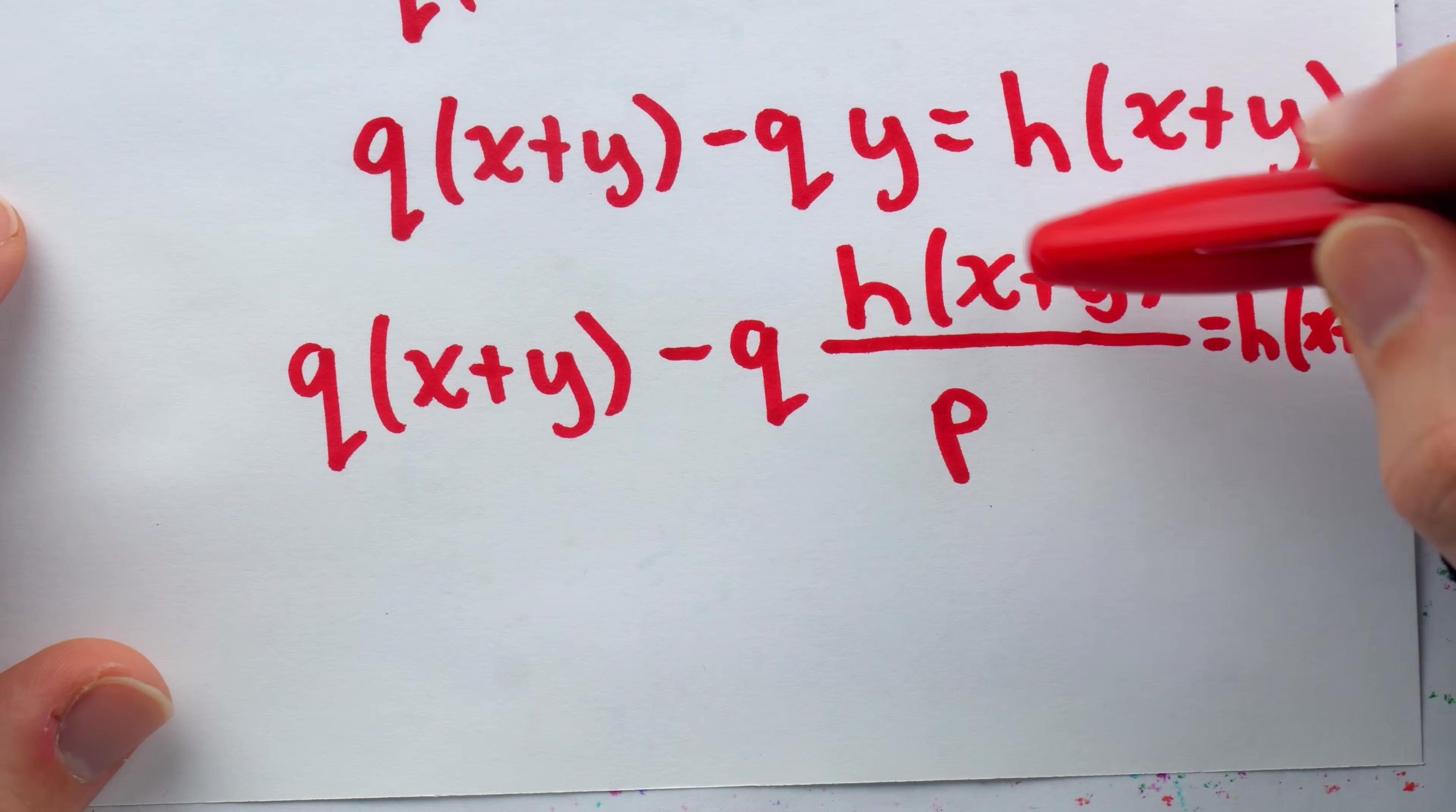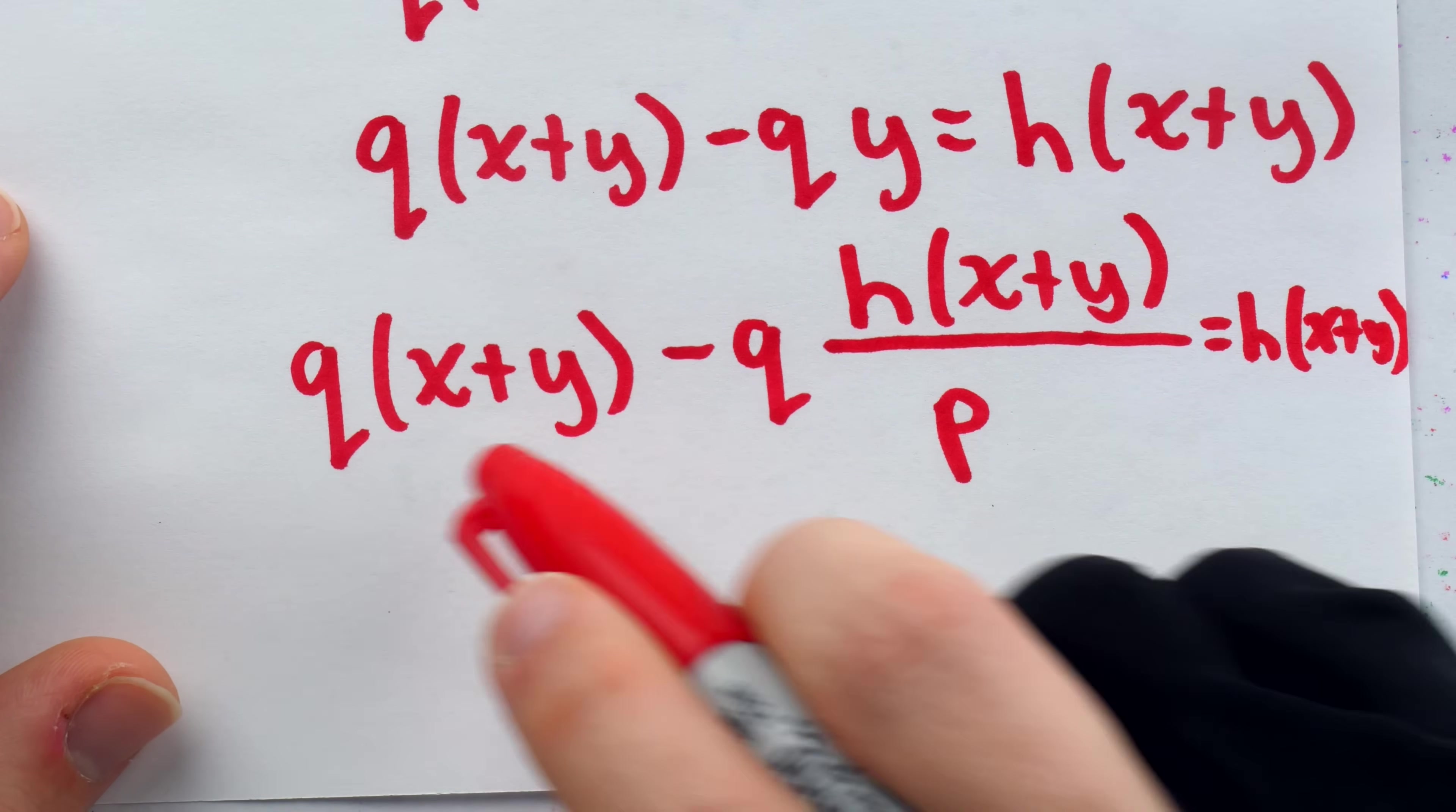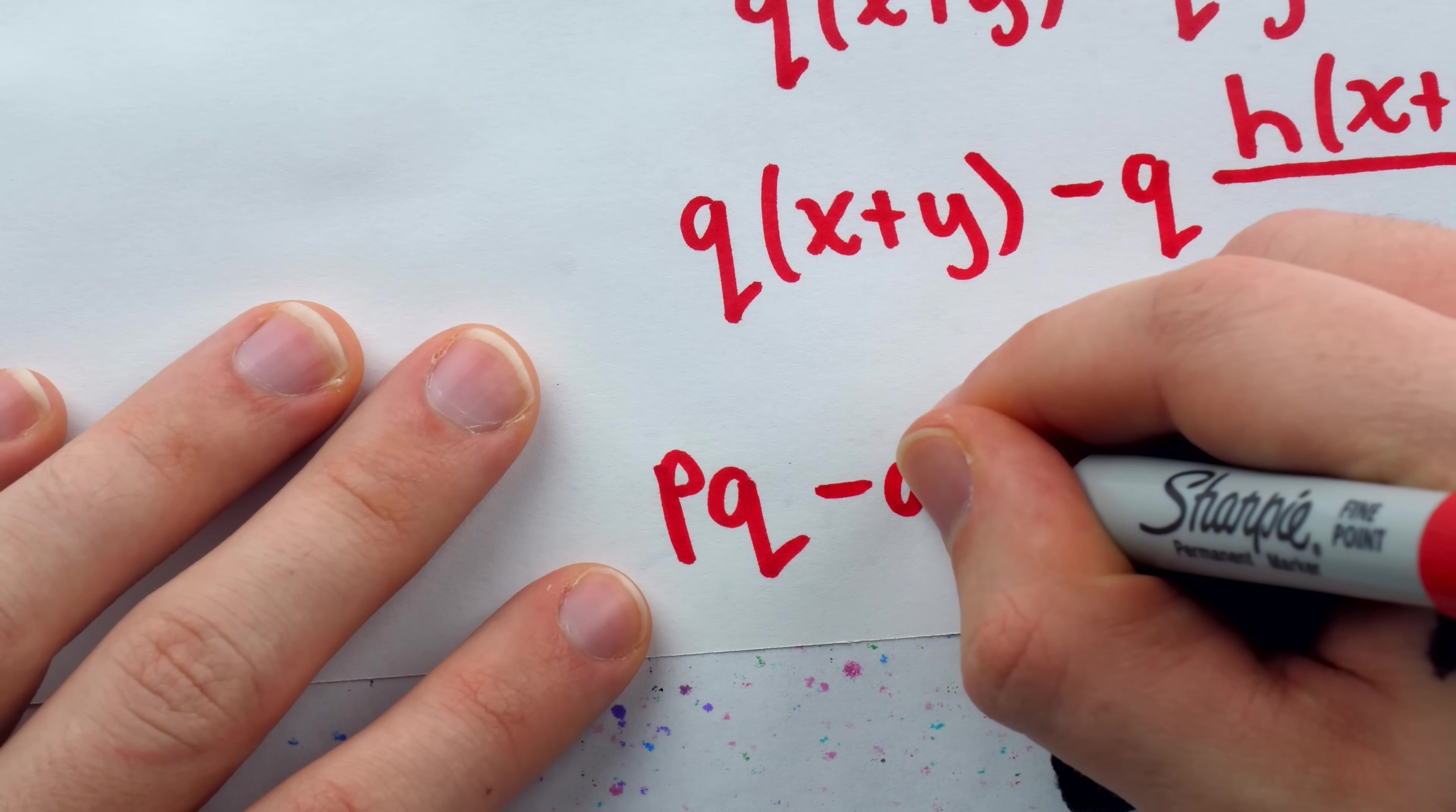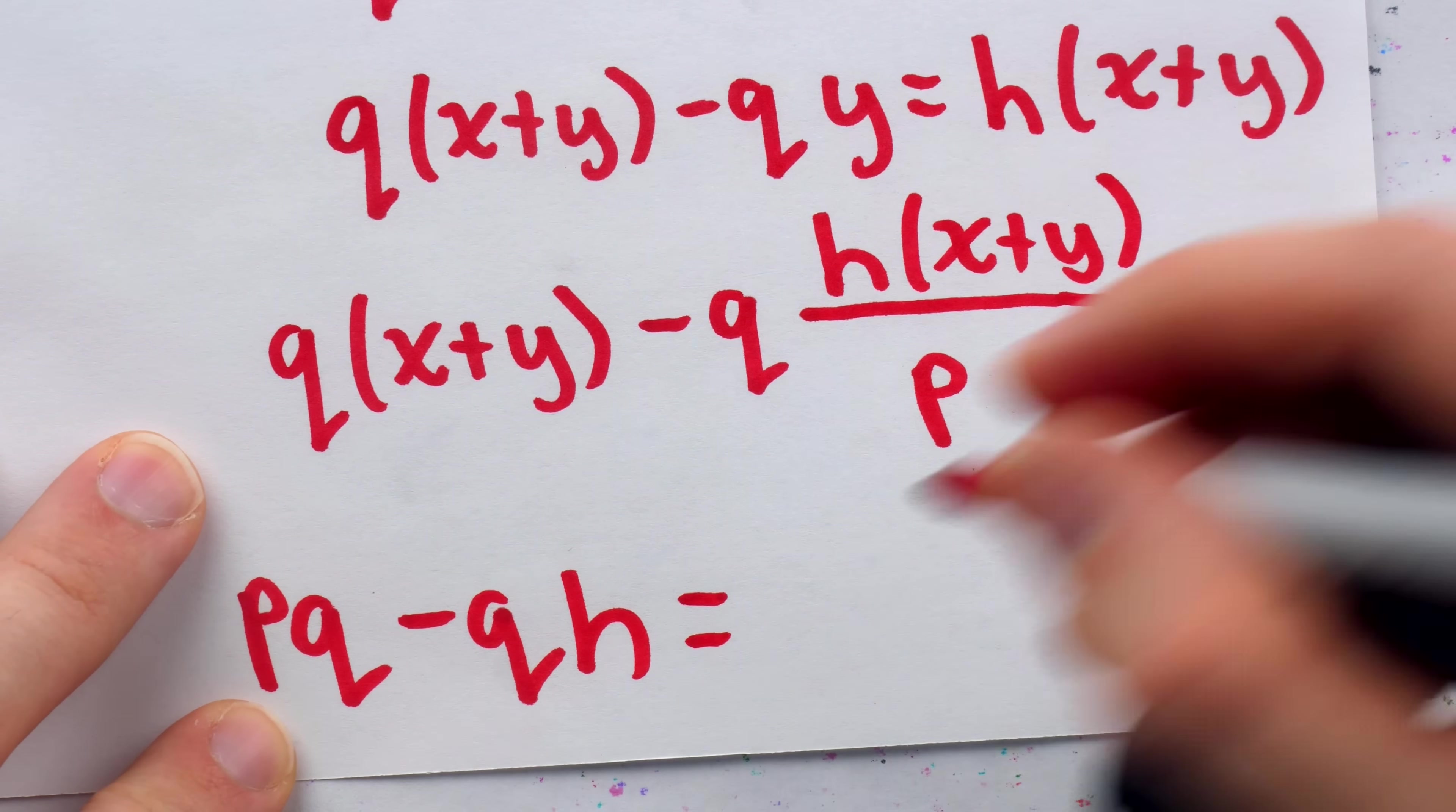Now, everything has a factor of X plus Y. So we're going to divide everything by X plus Y. But also, we would like to get rid of this P in the denominator. So we're going to multiply everything by P as well. So multiply everything by P, divide everything by X plus Y. That's going to give us P times Q minus Q times H. That's this second term after the multiplication and division. And on the right, we will have H times P.